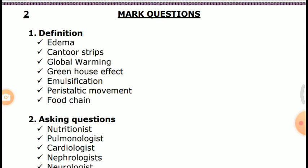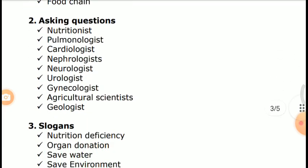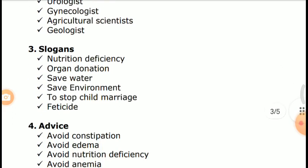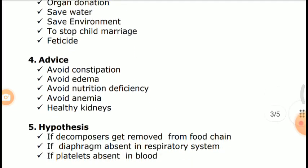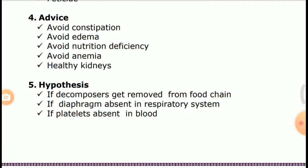Additional important questions include: Parastralic Movement, Food Chain, asking-type questions about specialists such as Nutritionist, Pulmonologist, Cardiologist, Nephrologist, Neurologist, Urologist, Gynecologist, Agricultural Scientist, and Geologist. Also slogans on Nutrition Deficiency, Organ Donation, Save Water, Save Environment, stopping child marriage, and Feticide advice.